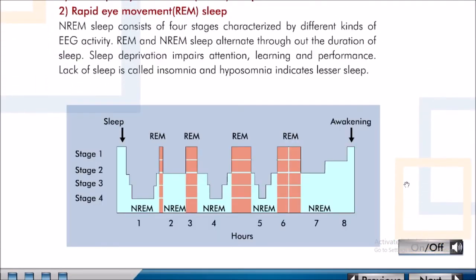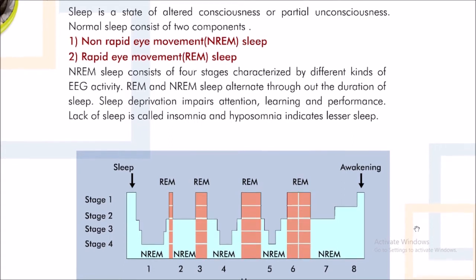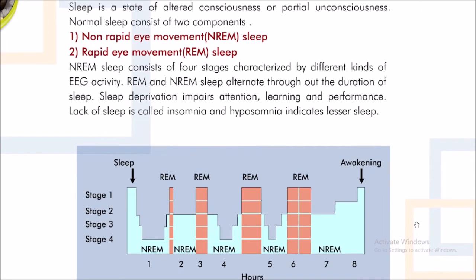Sleep is a state of altered consciousness or partial unconsciousness. Normal sleep consists of two components: non-rapid eye movement (NREM) sleep and rapid eye movement (REM) sleep. NREM sleep consists of four stages characterized by different kinds of EEG activity.